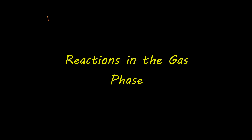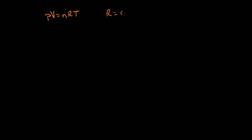In the previous video, we learned about the ideal gas law, which tells us that PV equals nRT. P is pressure, V is volume, N is moles, R is the gas constant which is 0.08206 liter atmosphere per mole Kelvin, and T is our temperature. We talked about why units are important: pressure must be in atmospheres, volume must be in liters, and temperature must be in Kelvin, so that the units of our gas constant work out.